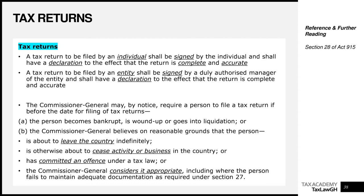The Commissioner General may by notice require a person to file a tax return before the due date if, before that date, the person becomes bankrupt, is wound up, or goes into liquidation. These are preemptive measures — revenue protection measures. If he feels that waiting for the due date means he may not get the money, he has the power to require you to file a tax return even before the due date, to protect and assure tax revenue.